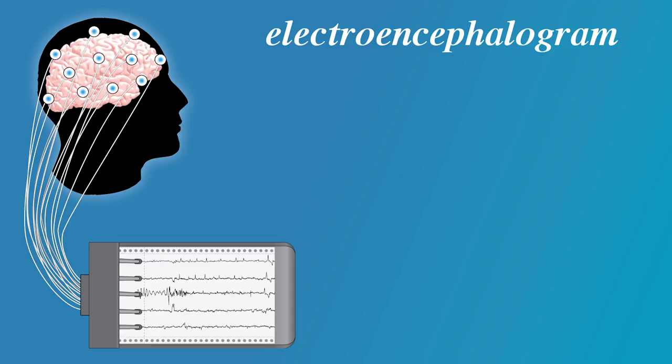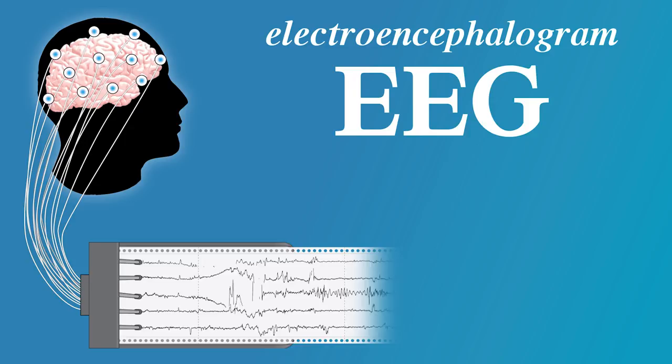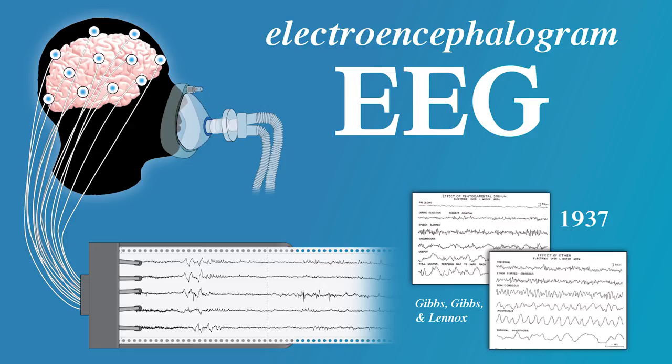The electroencephalogram, or EEG, allows us to monitor the electrical activity of the brain. As far back as the 1930s, researchers suggested that the EEG could be used to monitor the depth of anesthesia.